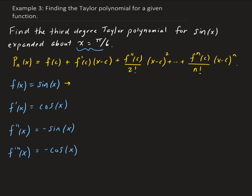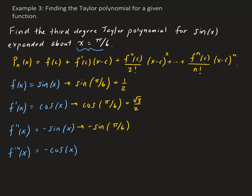So sine of pi over 6 is one half. Cosine of pi over 6 is root 3 over 2. Minus sine of pi over 6 gives us minus one half. And minus cosine of pi over 6 is minus root 3 over 2. So we now have all our values.